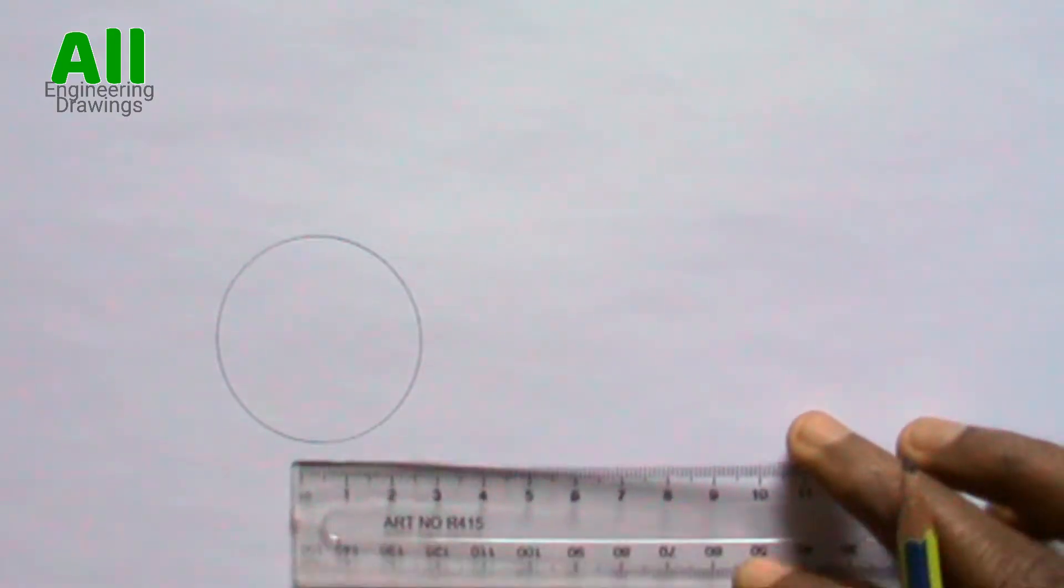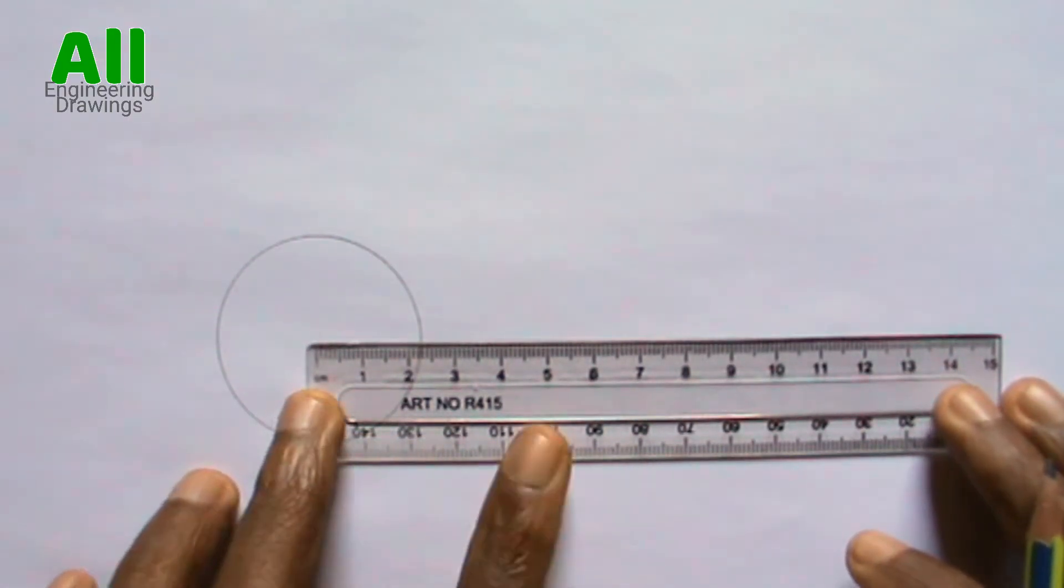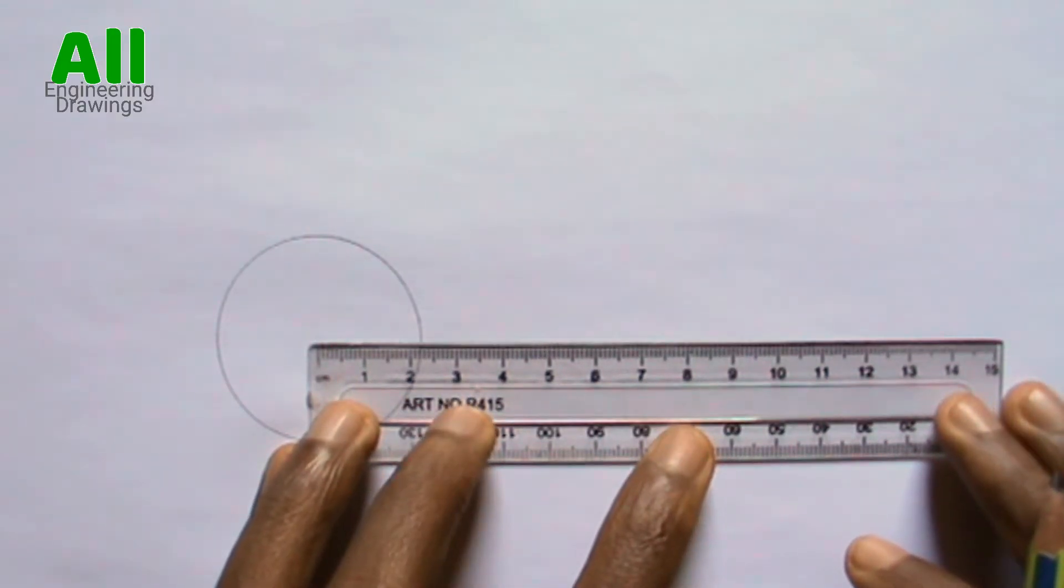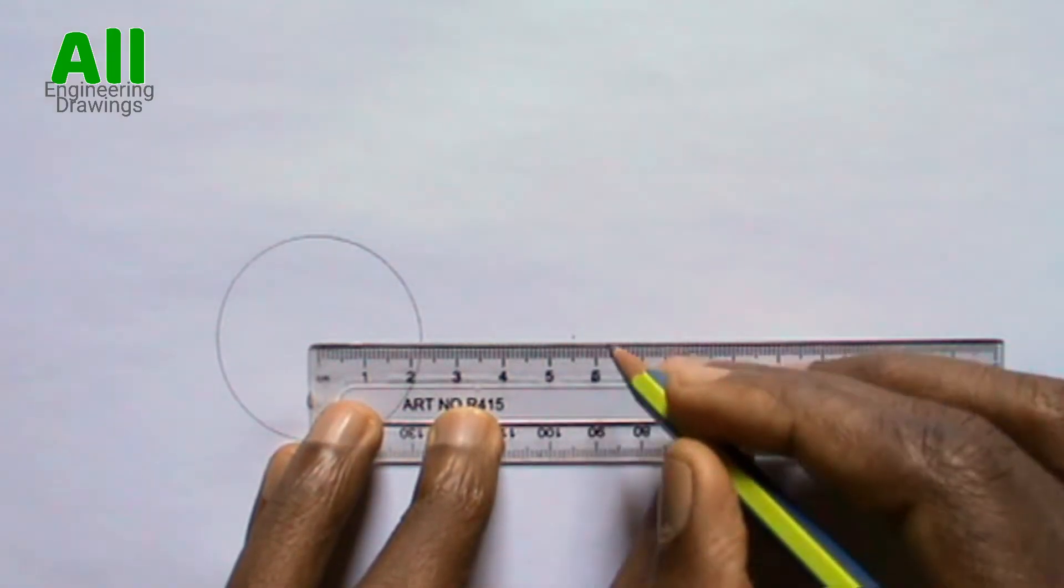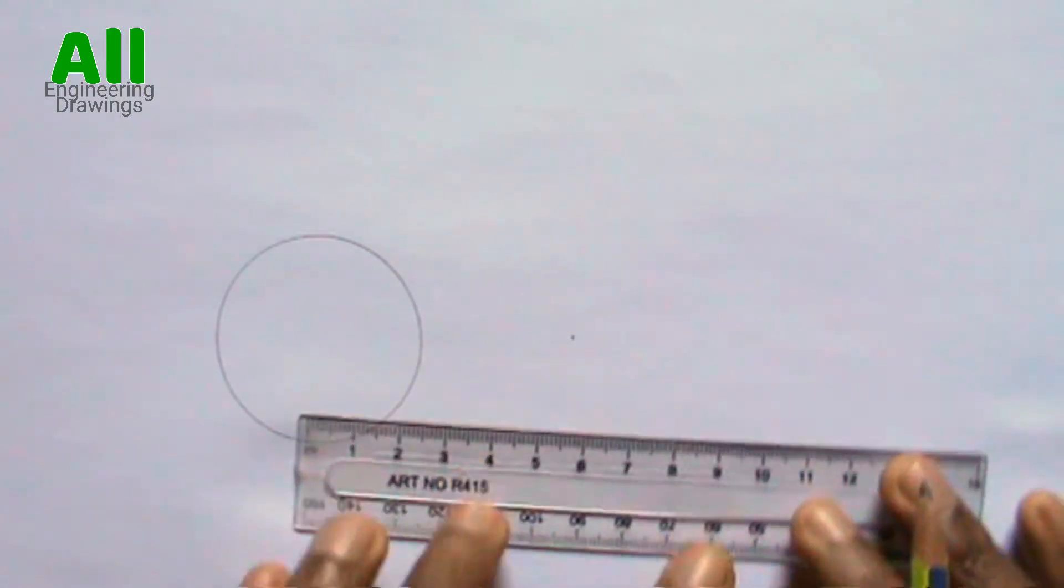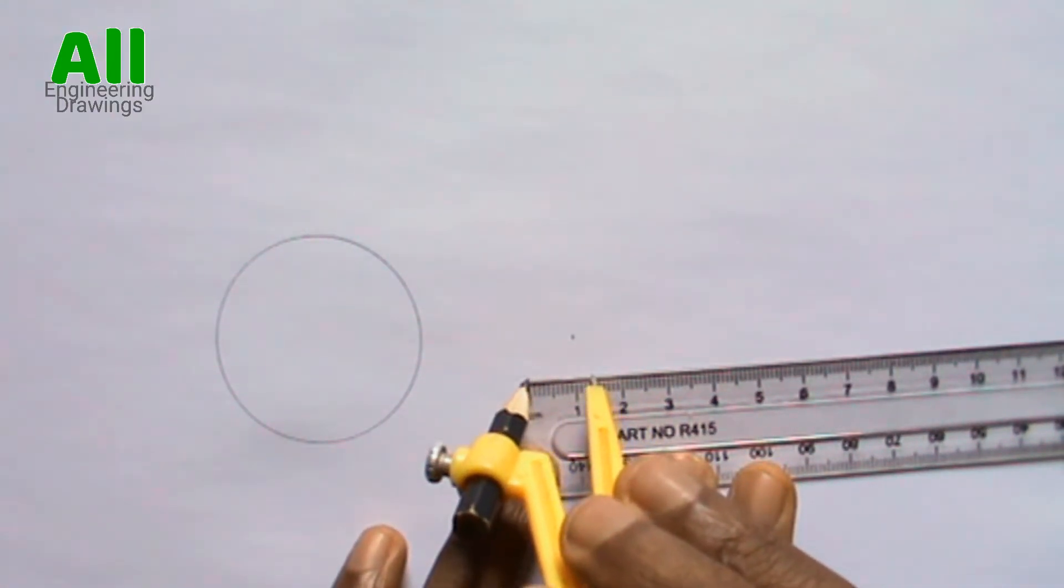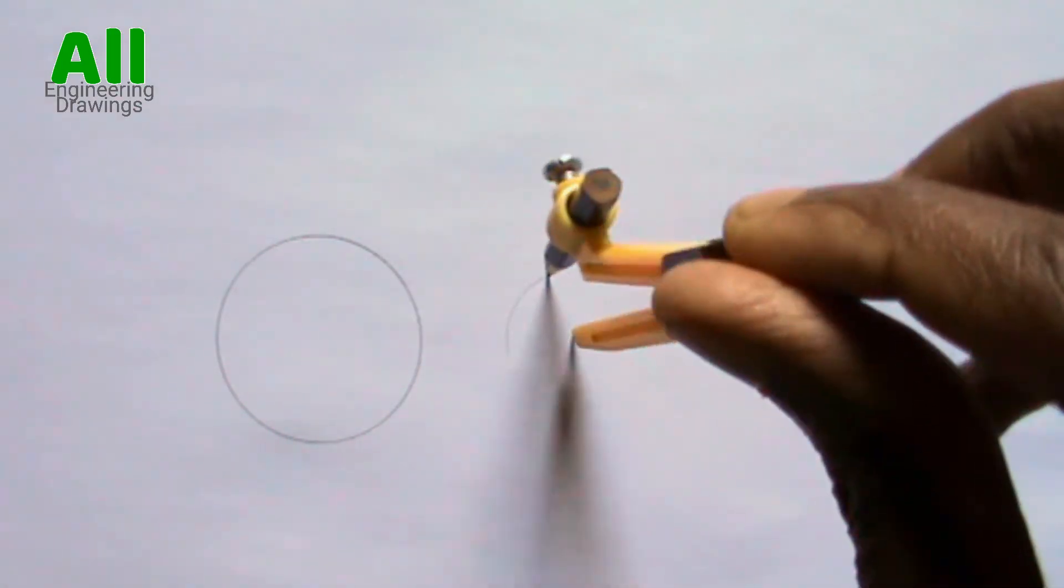After drawing the first cycle to the required radius you have to mark the point where you will draw the second cycle. Now extend your compass to the radius of the second cycle, then place your compass on the point you marked and now draw your cycle.